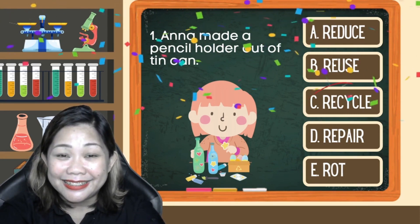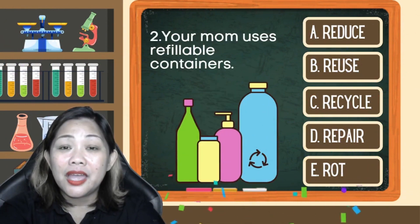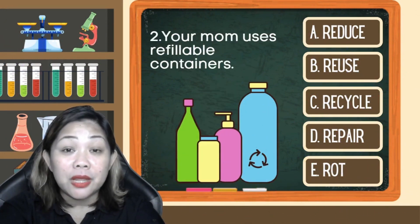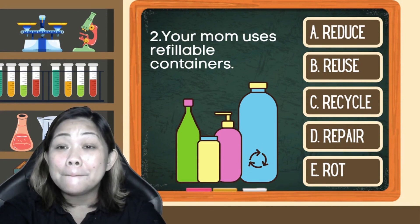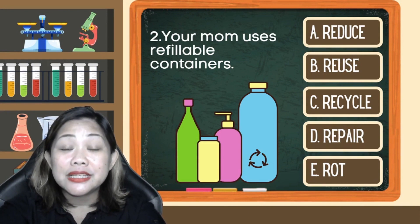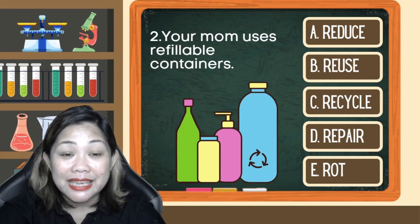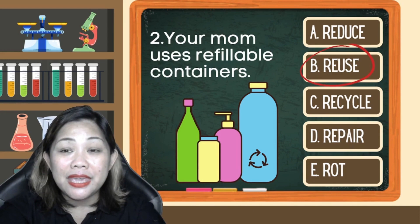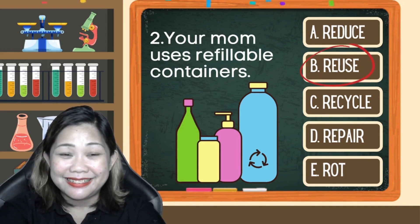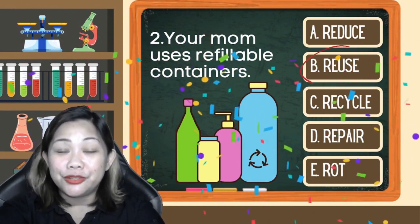Number 2: Your mom uses refillable containers. Is it A. Reduce, B. Reuse, C. Recycle, D. Repair, or E. Rot? The correct answer is B. Reuse. Good job!